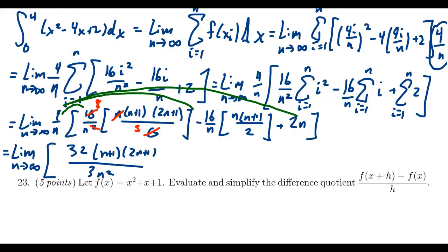For the second one, you have n's that cancel. 2 goes into 16, 8 times. You're then going to distribute the 4 over n onto that, in which case you're going to get a negative 4 times 8, which is 32, times n plus 1. And this sits above an n. And then for the last one, you'll distribute the 4 over n. So you get 4 times 2, which is 8, n over n, for which then these n's likewise cancel out right here.